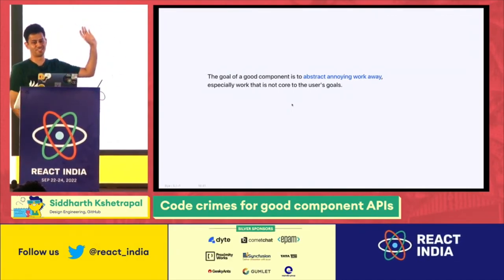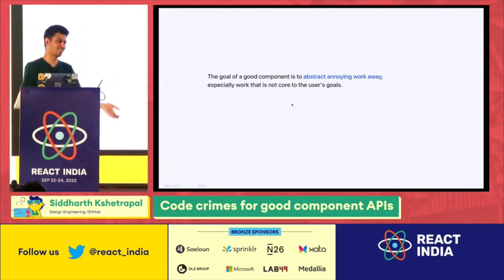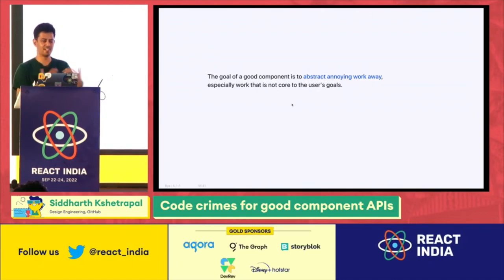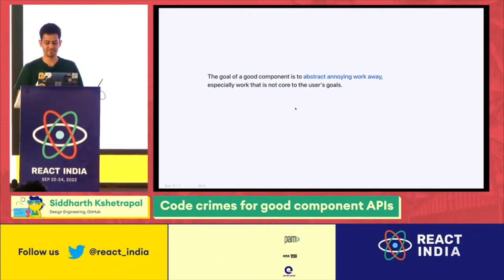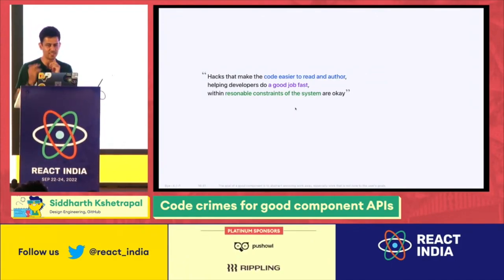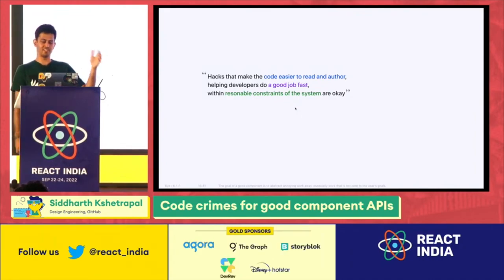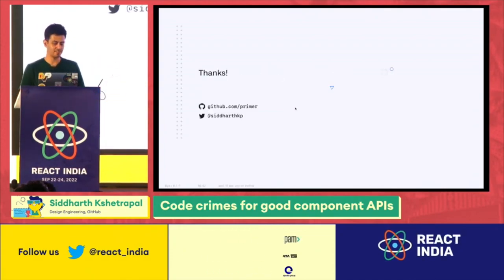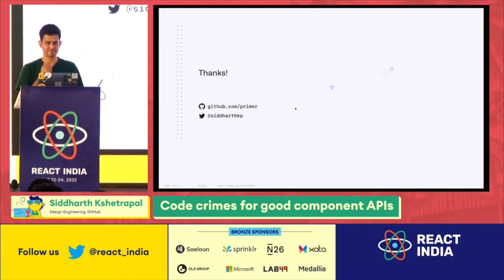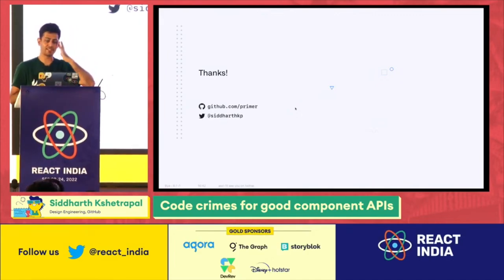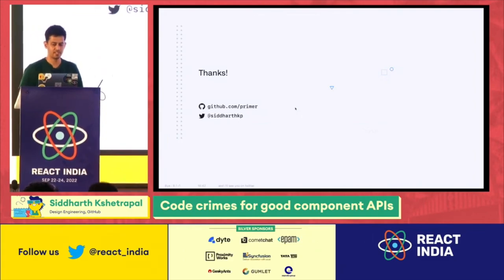Once again: the goal of a good component is to abstract annoying work away from the user, especially work not core to their goals. If I'm not doing it, the developer working on the component has to, and they'll probably do something similar or worse — or just not do anything at all, leaving a slightly bad user experience forever. Anti-patterns have a name because they're useful. Final thought: a hack that makes code easier to read and author, helping developers do a good job quicker, within reasonable constraints of a system — is okay. Sometimes crimes are okay.